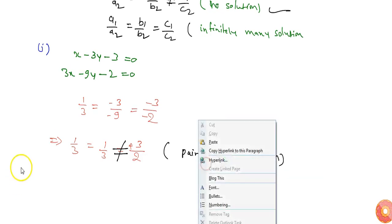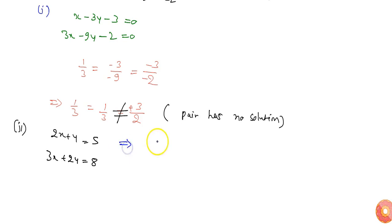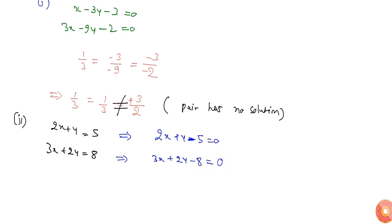Now let's take part two. I can write this equation as 2x + y + 5 = 0, and 3x + 2y - 8 = 0.